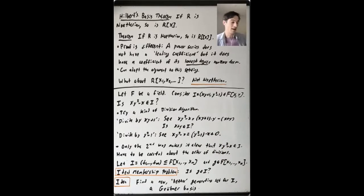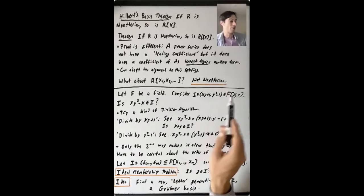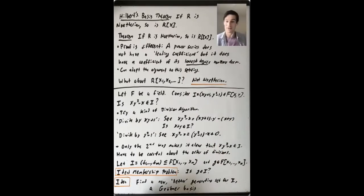So a field is certainly Noetherian. So F bracket X, Y is also Noetherian.